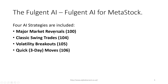Major market reversals is a trading strategy developed by the AI — it's more like a position trade, expecting a huge move in the direction of the reversal. Classic swing trades are for the swing trader; the holding period is a couple of days to a couple of weeks. Volatility breakouts also last a couple of days to weeks. Quick three-day moves means you're in and out on the fourth day. My favorites are major market reversals and volatility breakouts — these are position trades that can last from days to weeks to months.